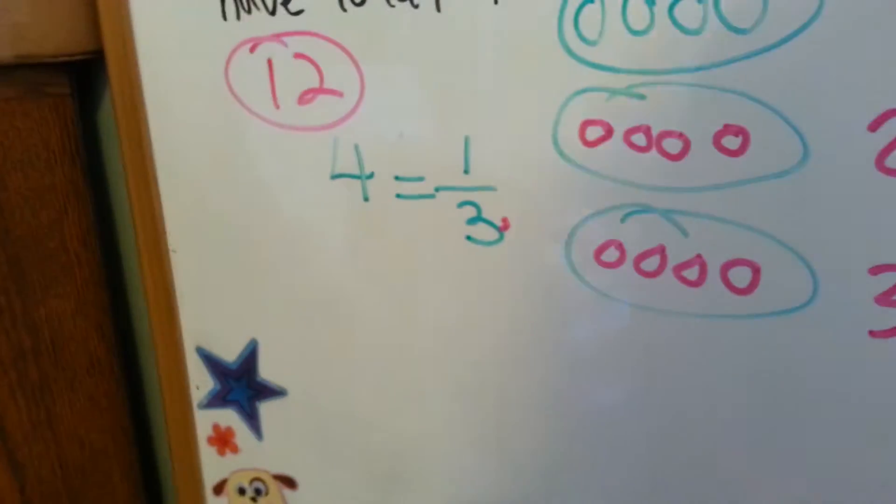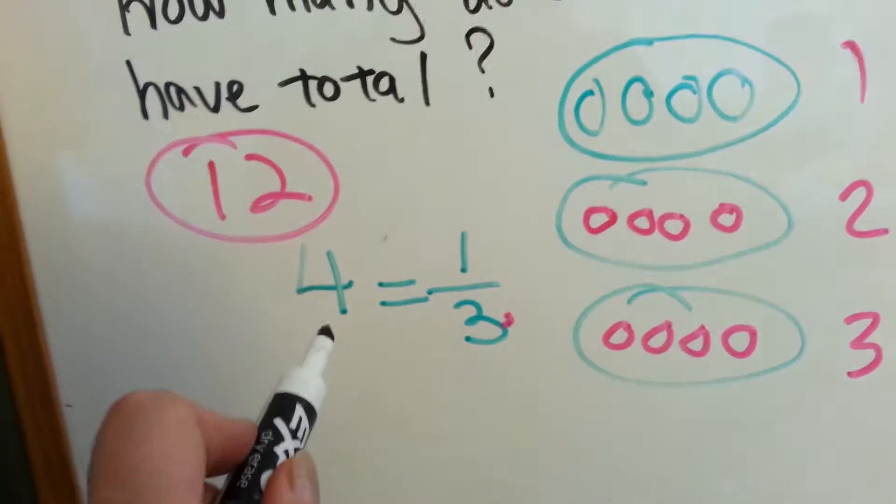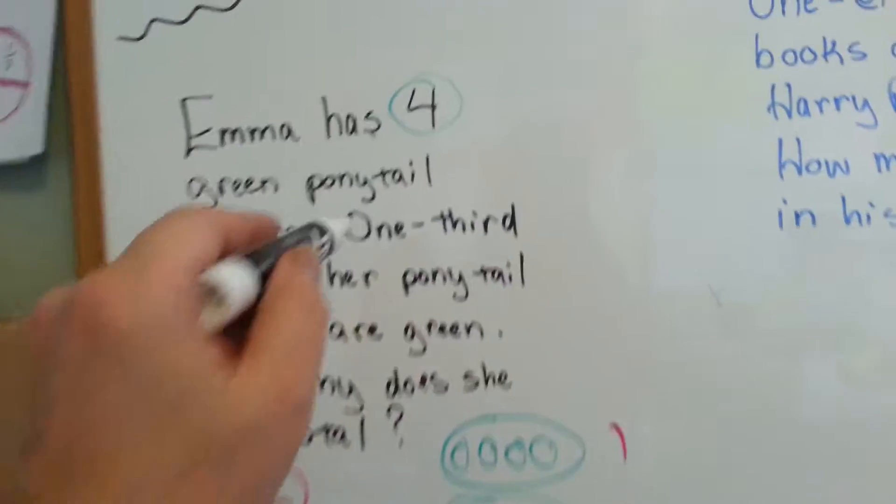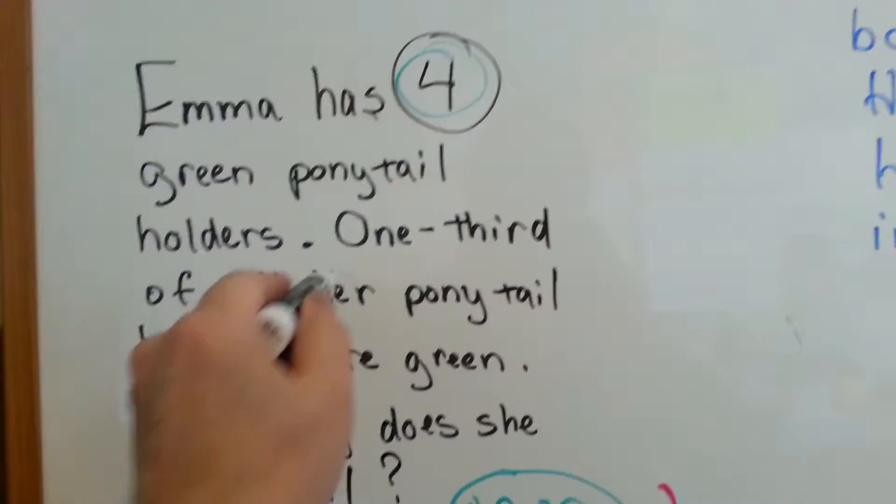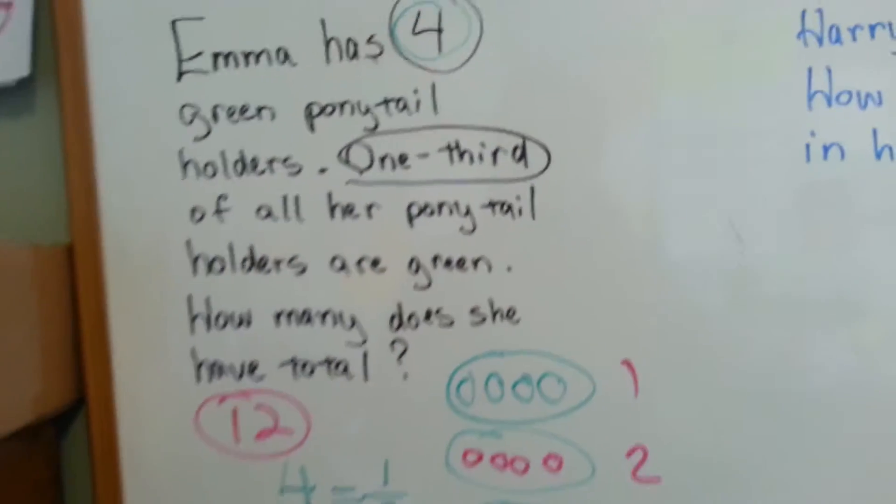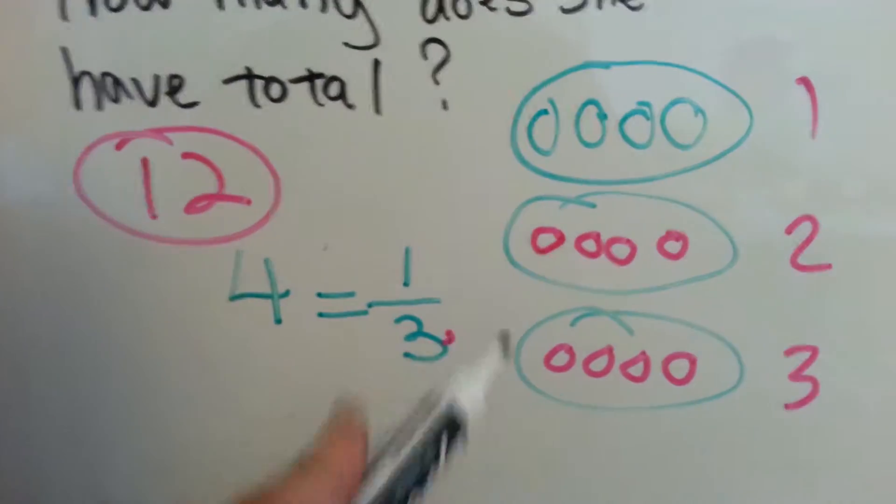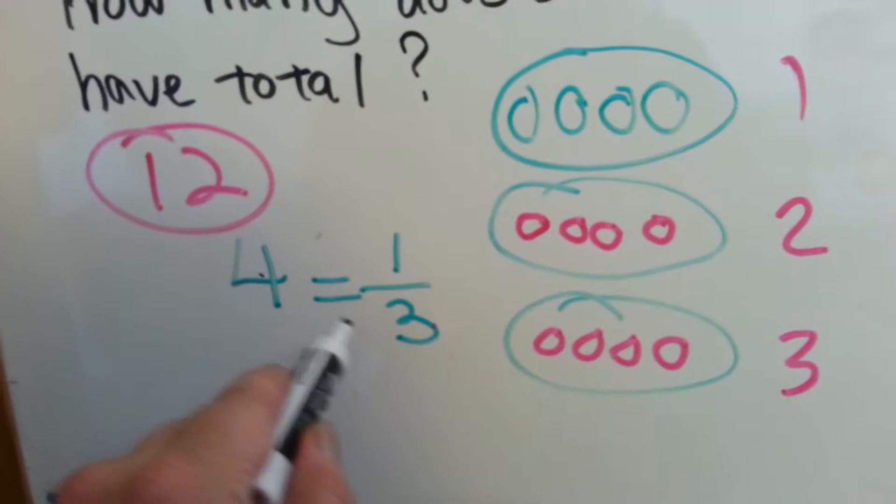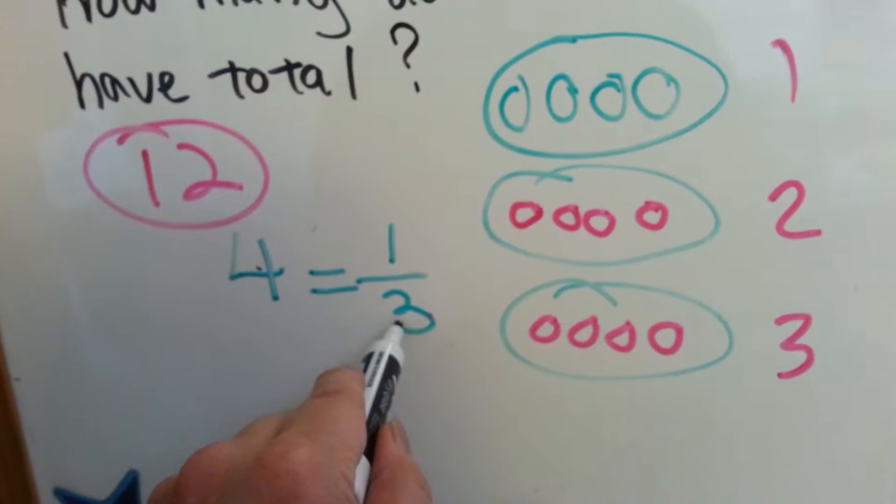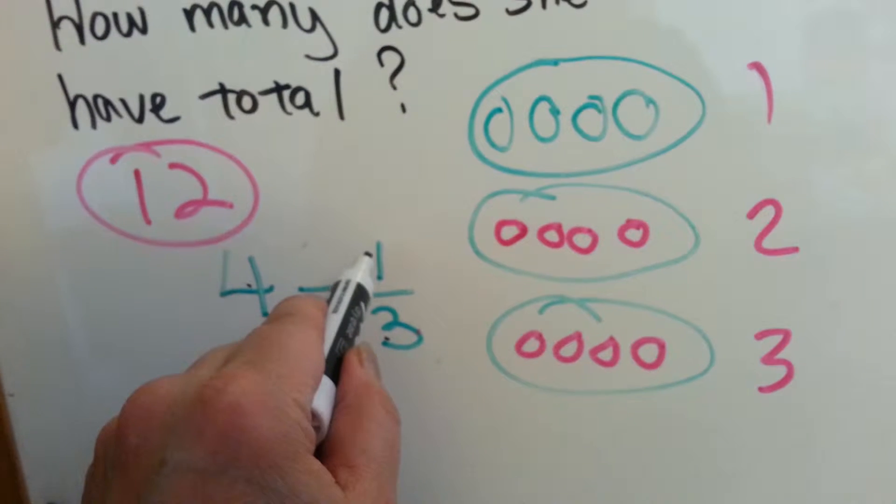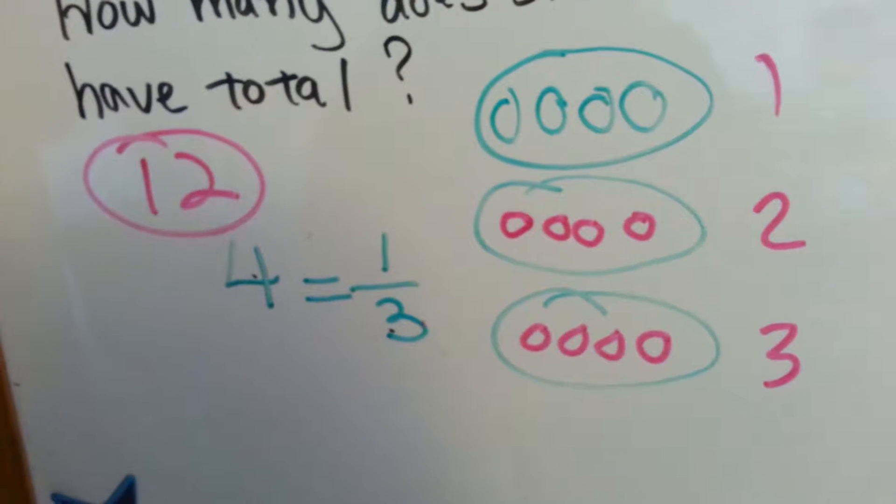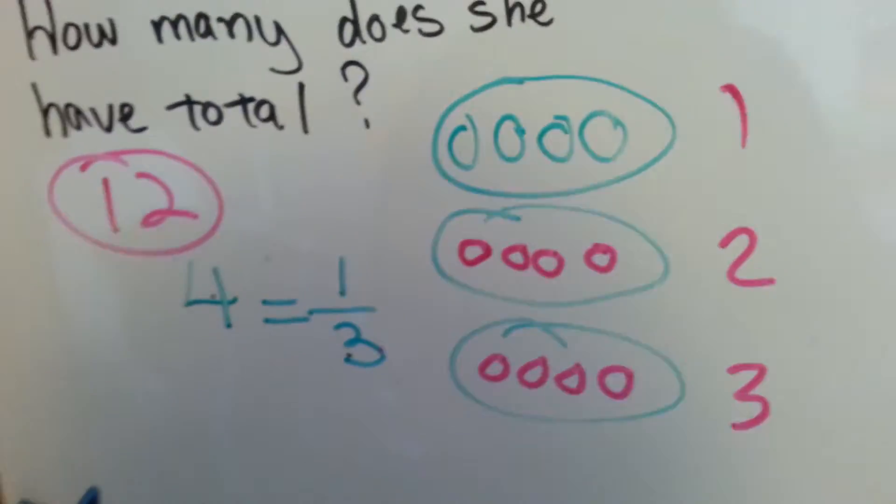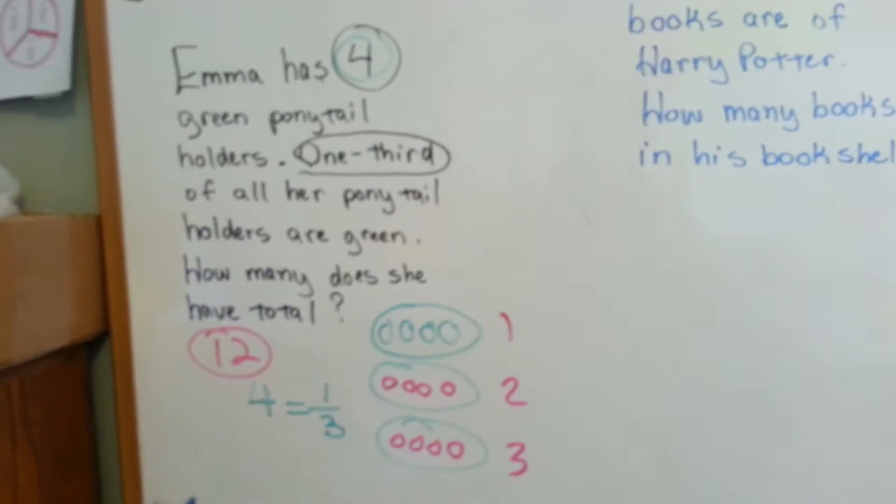There's another way to do this without having to draw pictures, and it has to do with this. We took the important information from the word problem, four, and the other important piece of information is one-third. If four equals one-third, all we have to do is say four times the denominator, three, which is twelve, times one is twelve. And that tells us it's twelve. See? You want to try another one?